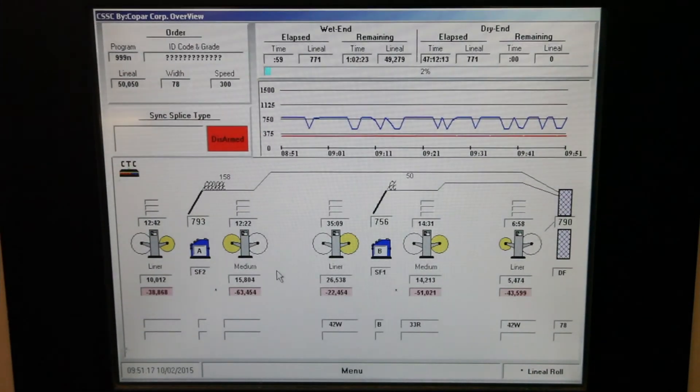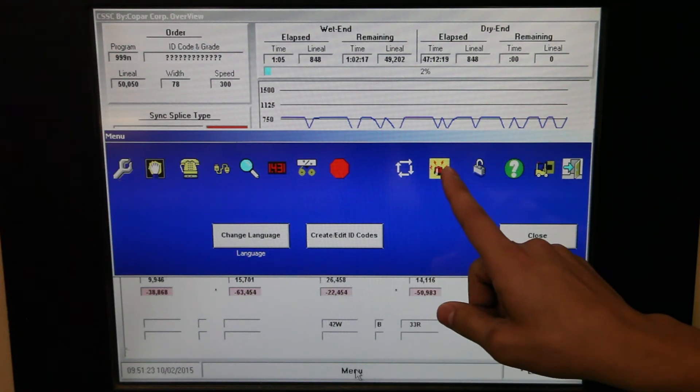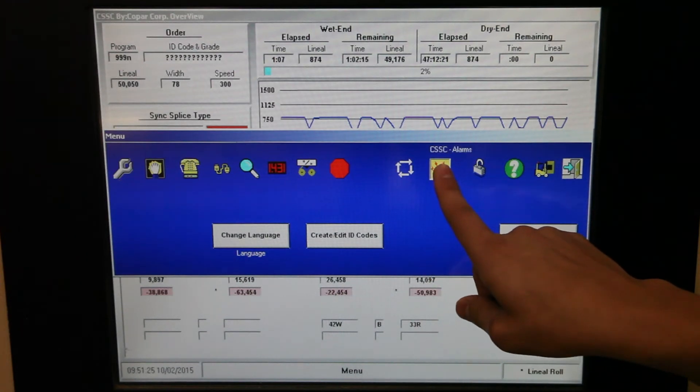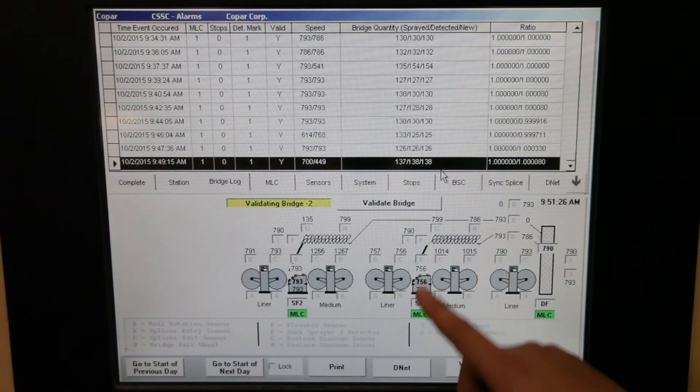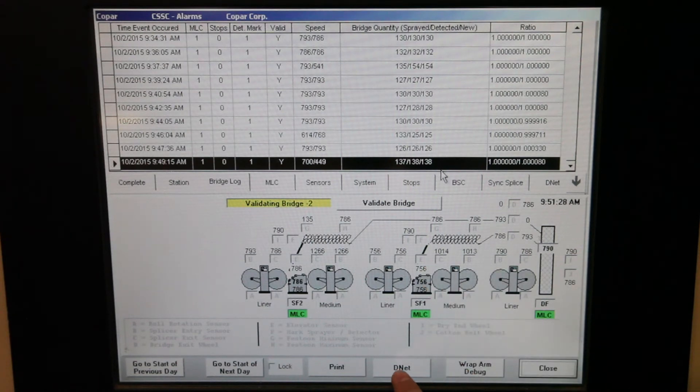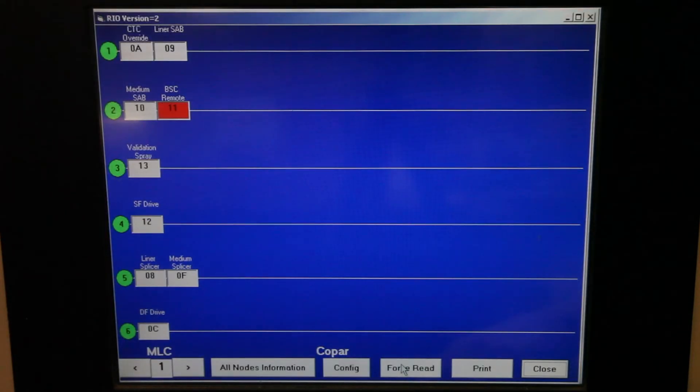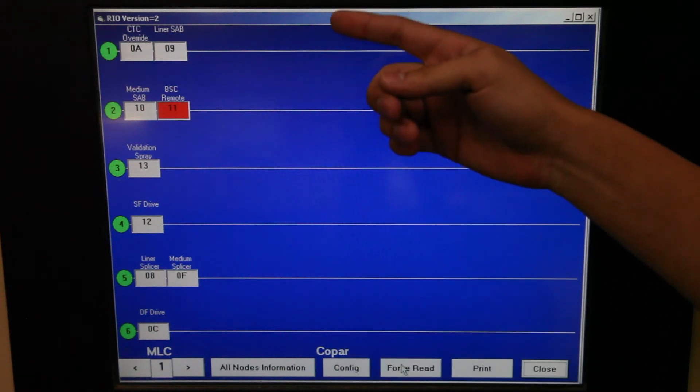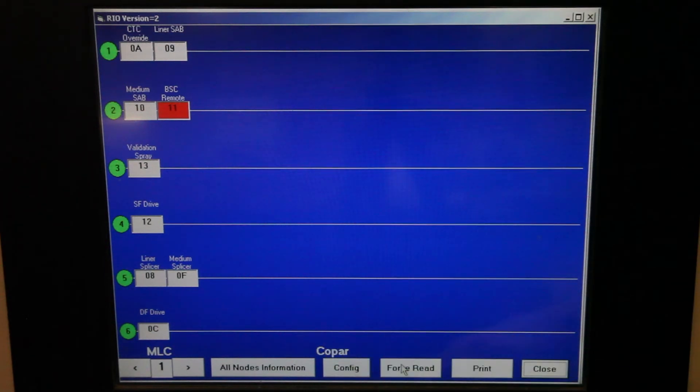This is how we get to the D-Net screen for troubleshooting. Press Menu on the bottom of the screen. Then press the icon that looks like an alarm to open the alarm screen. Press D-Net on the bottom of the alarm screen, which will bring up the D-Net status screen. What we see here is each of the six individual channels and what is actually connected on each string.